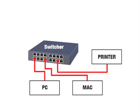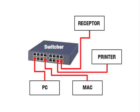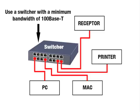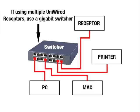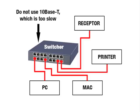Muse Research recommends that you use a switcher with a minimum bandwidth of 100BaseT, although if you plan to use multiple receptors in a uni-wired studio, then a fast Gigabit switcher will yield more simultaneous audio and MIDI tracks. 10BaseT switchers are too slow for most receptor applications.